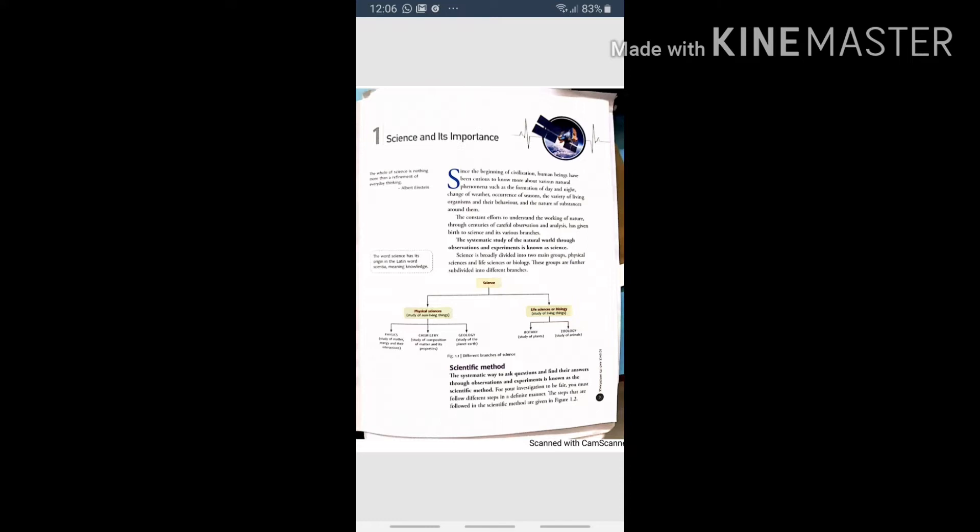The second branch of science is life sciences or biology. It is divided into Botany and Zoology. Botany is study of plants and Zoology is study of animals.